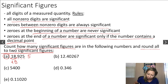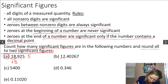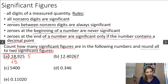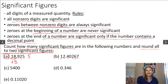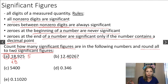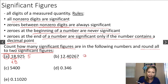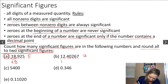Let's look at example B. How many non-zero digits do we have? 1, 2, 3, 4, 5, 6 — so we have at least six significant figures. We also have a zero between non-zero digits. The rule says zeros between non-zero digits are always significant, so we count that zero as well. In total, we have 7 significant figures. Rounding to two significant figures gives us 12.